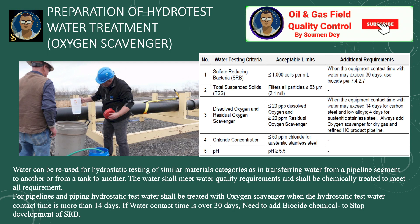Chloride concentration should be less than 50 ppm for austenitic stainless steel, and pH value should be greater than 5.5. Water can be reused for hydrostatic testing of similar material categories — such as transferring water from one pipeline segment to another or from one tank to another — provided it meets water quality requirements and is chemically treated. For pipelines and piping, hydrotest water shall be treated with oxygen scavenger when contact time is more than 14 days. If water contact time is over 30 days, biocide chemical must be added to stop the development of SRB.